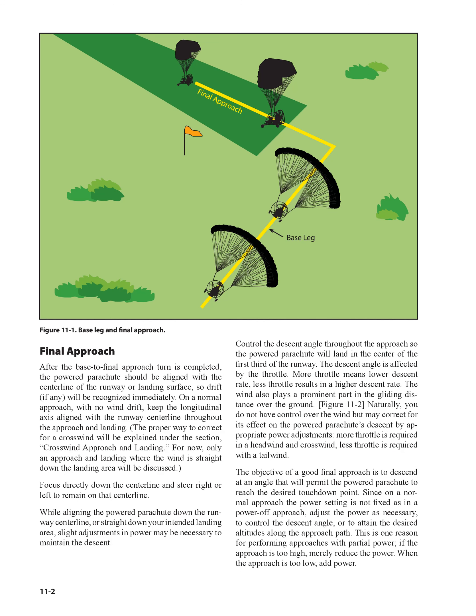Final Approach: After the base-to-final approach turn is completed, the powered parachute should be aligned with the centerline of the runway or landing surface, so drift, if any, will be recognized immediately. On a normal approach with no wind drift, keep the longitudinal axis aligned with the runway centerline throughout the approach and landing. The proper way to correct for a crosswind will be explained under the Crosswind Approach and Landing section. For now, only an approach and landing where the wind is straight down the landing area will be discussed.